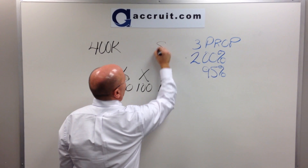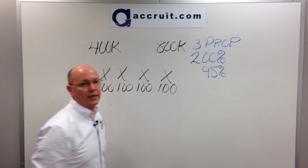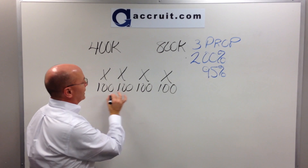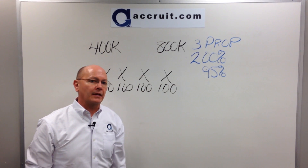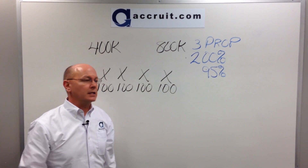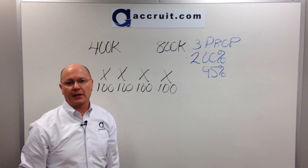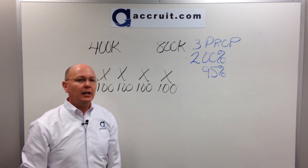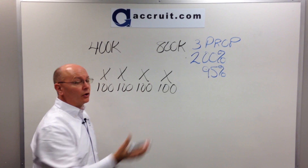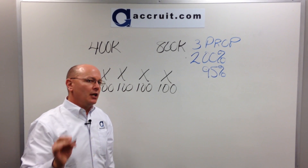So your 200% threshold in this case would be $800,000. If you list four properties at $100,000 each, you are okay to continue because you are well under that 200% threshold, and you can go ahead and buy one, two, three, or all four of the properties to complete your exchange.